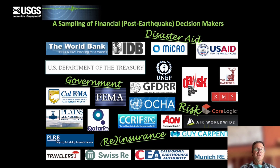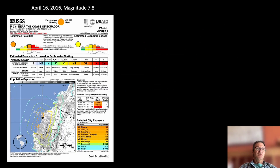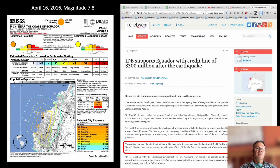Agencies are making post-earthquake financial decisions — whether reinsurance, catastrophe bonds, contingency loans, or other financial payouts — based on the products we're producing. For example, following the magnitude 7.8 2016 earthquake in Ecuador, the Inter-American Development Bank supported Ecuador's contingency loan credit line based on PAGER exposure and population shaking levels, within just a few days of the earthquake.